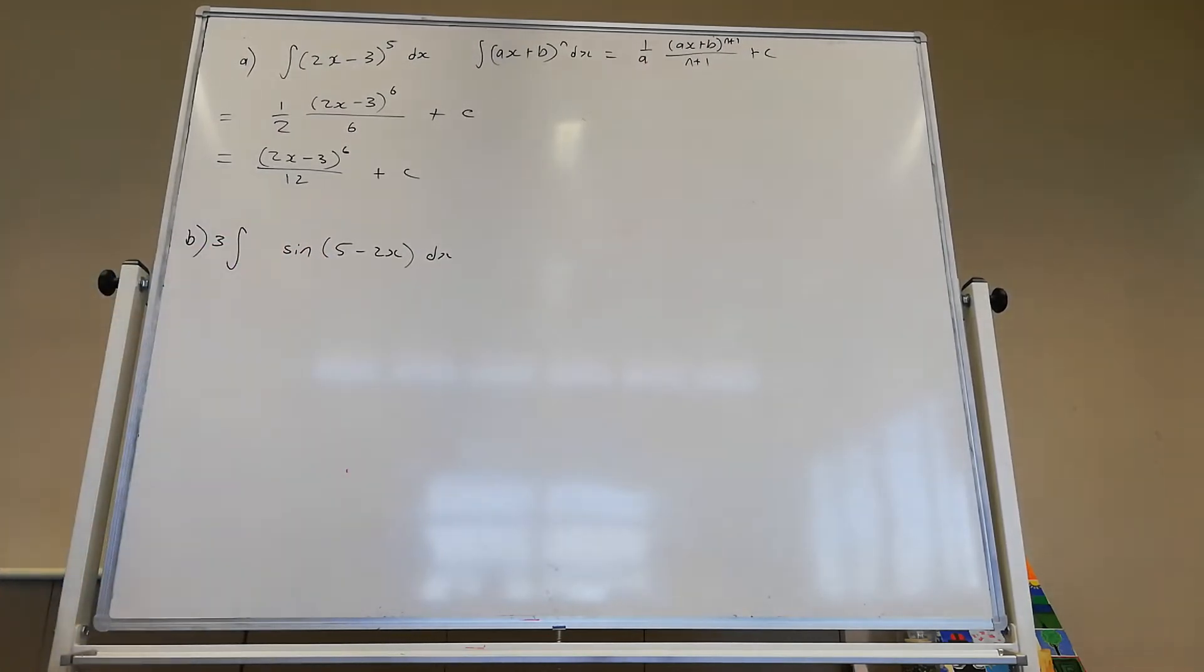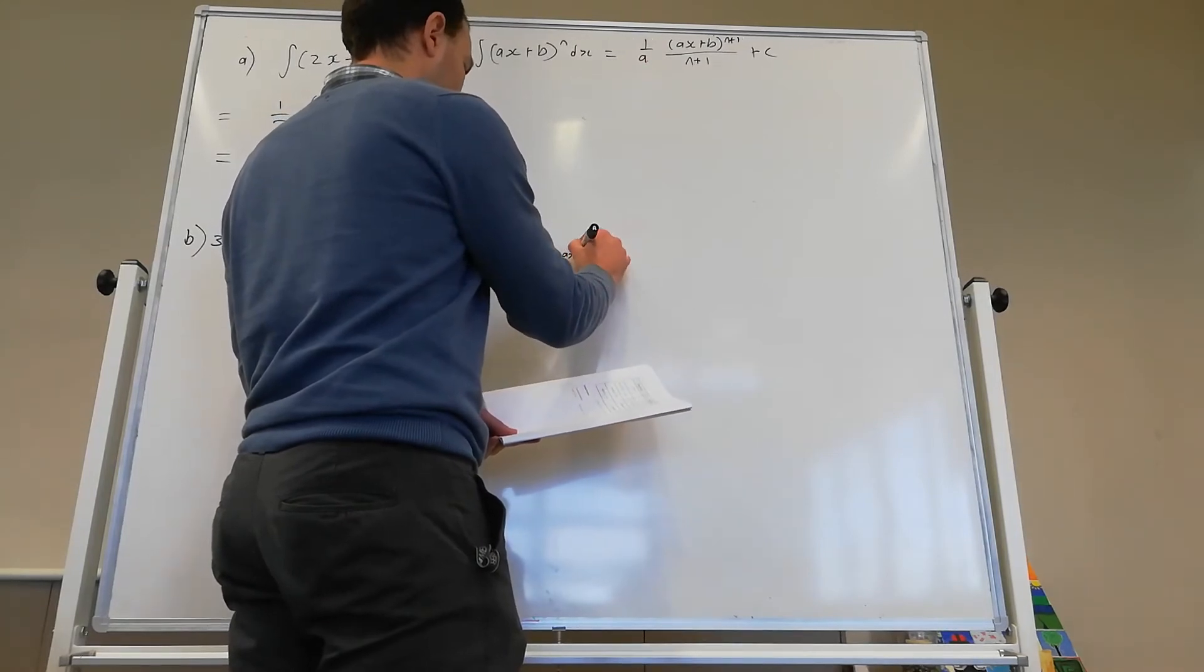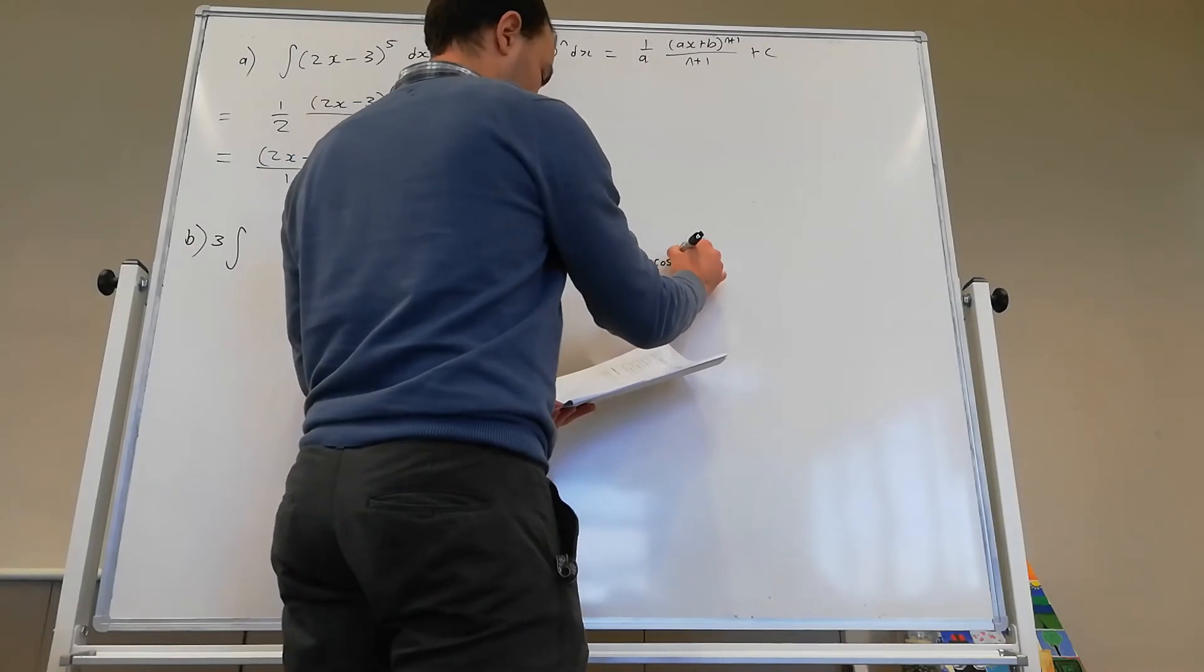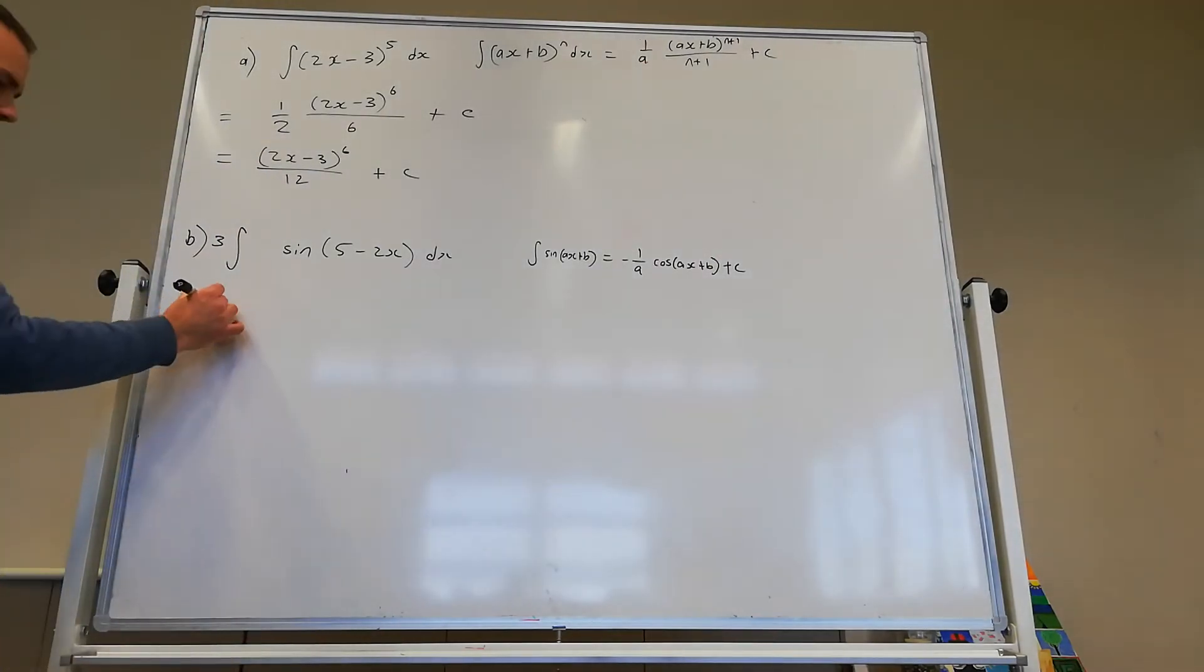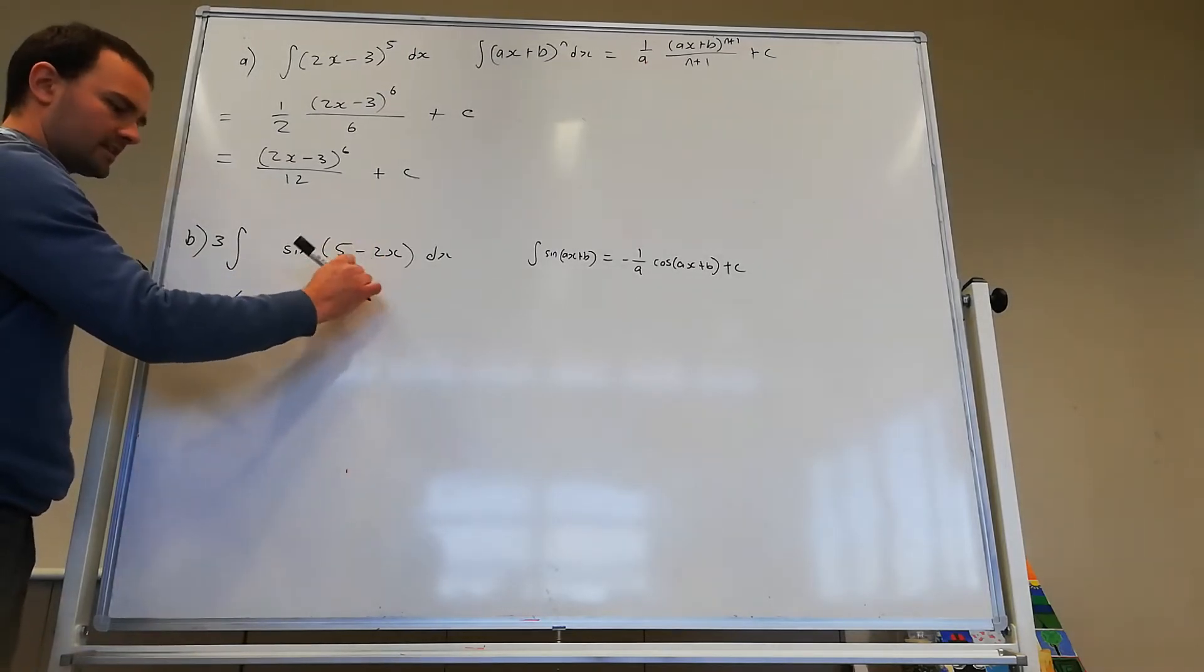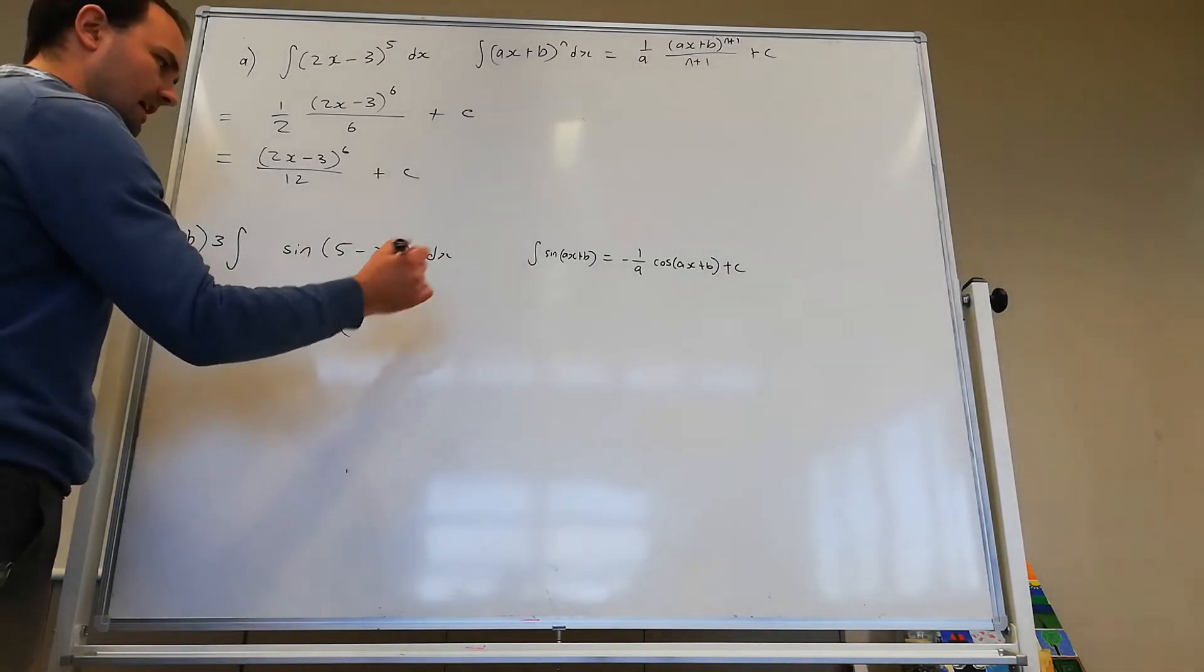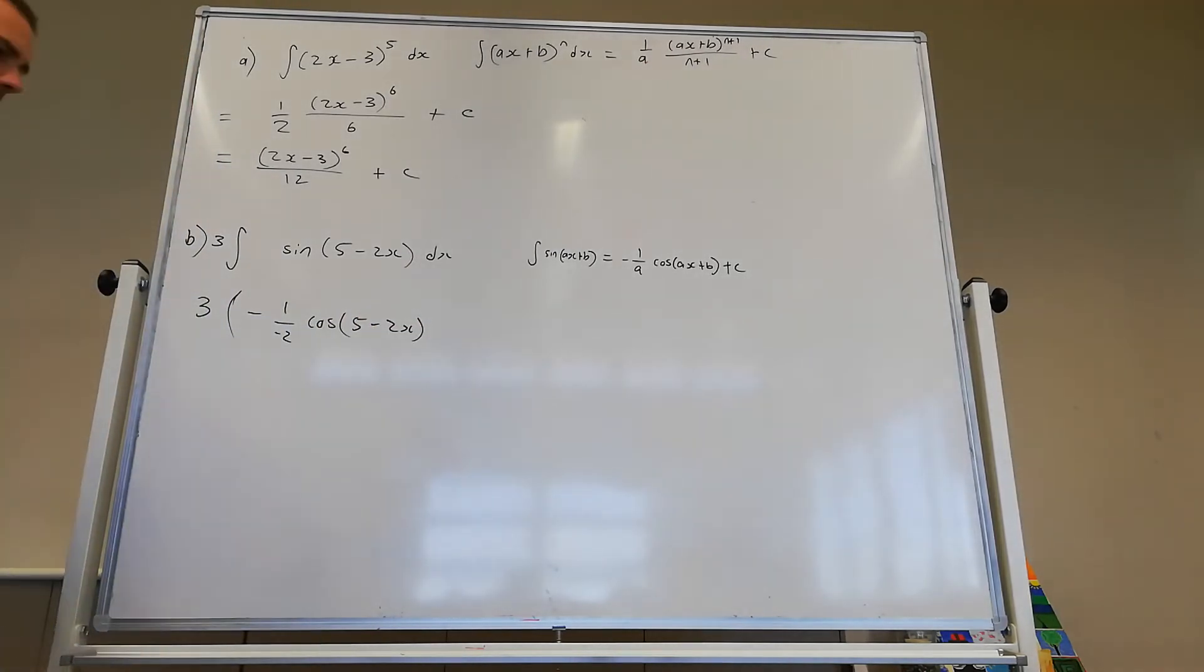So we're just considering the sin of ax plus b. And the integral of sin of ax plus b is minus 1 on a cos of ax plus b plus c. So that 3 is going to stay there. And we have times by minus 1 on top of a. Now a is minus 2. And then cos of ax plus b. Here it's written as 5 take 2x. That's 5. And then plus c.